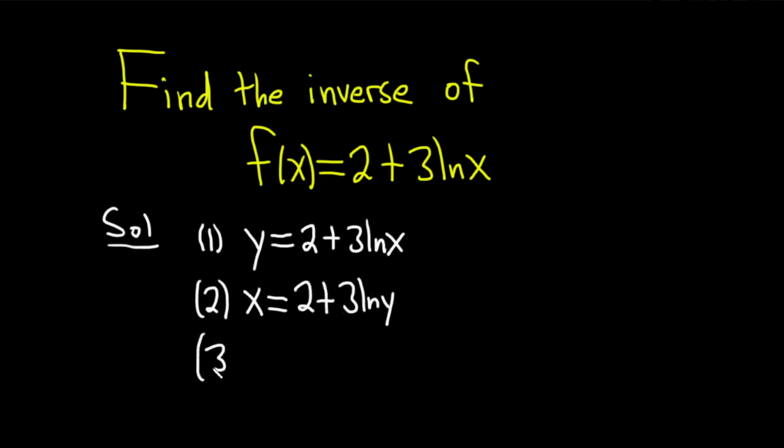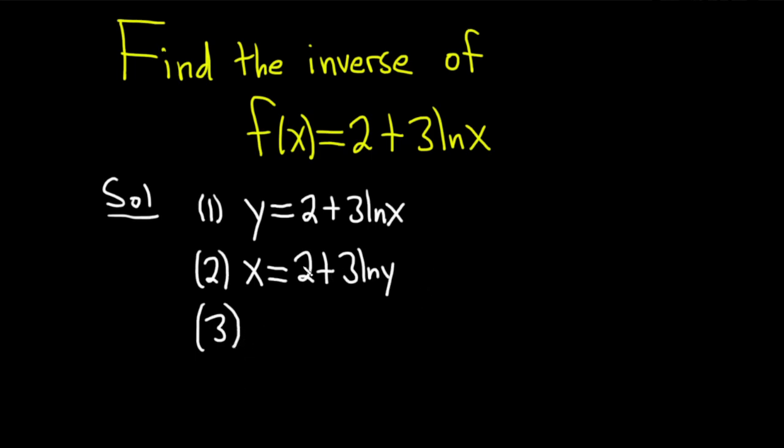Then step 3 is to actually solve for y. So in this problem, the y is inside the natural log. So we'll start by trying to isolate this piece here. So we need to get rid of this 2. Since it's a positive 2, we can subtract 2. So we have x minus 2 is equal to 3 times the natural log of y.